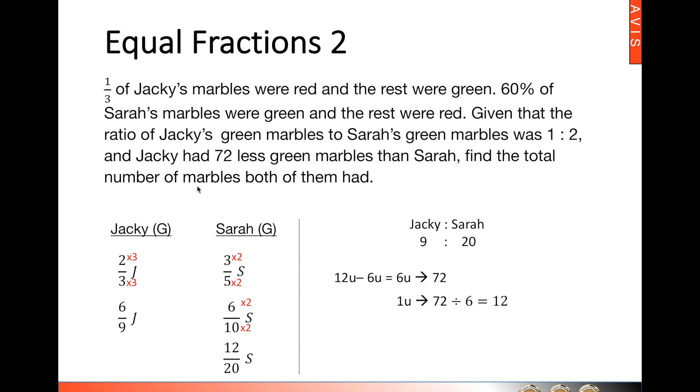Find the total number of marbles. This includes both red and green. Here we have nine units for Jackie, twenty units for Sarah, and that will give us twenty-nine units. So twenty-nine multiplied by twelve will give us three forty-eight.